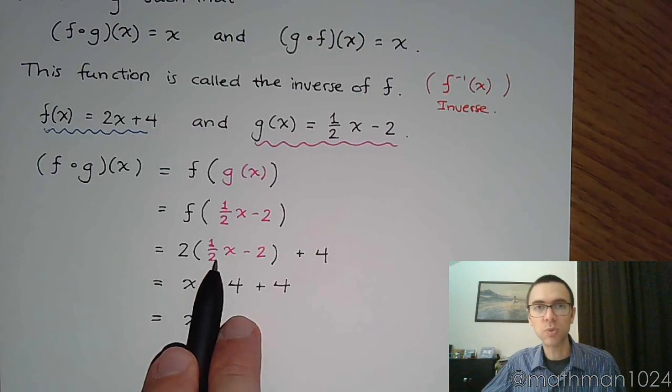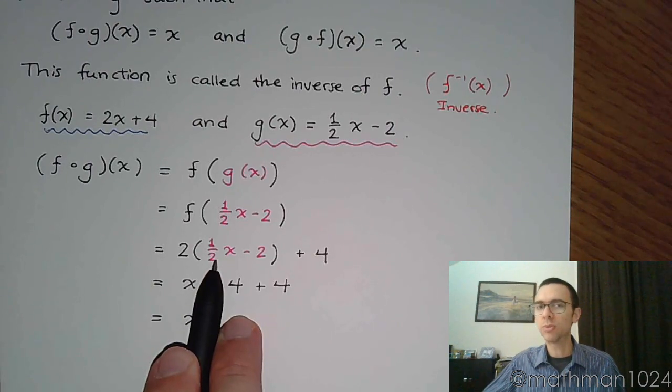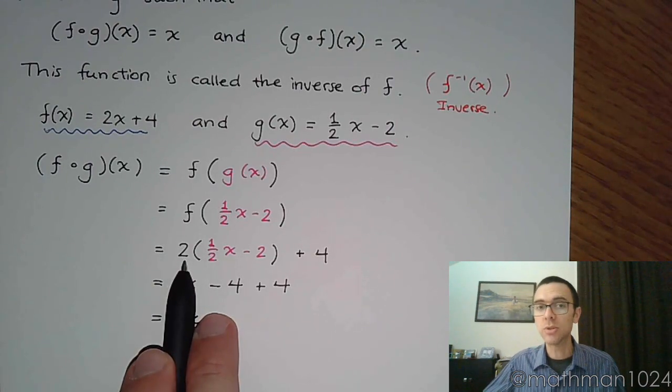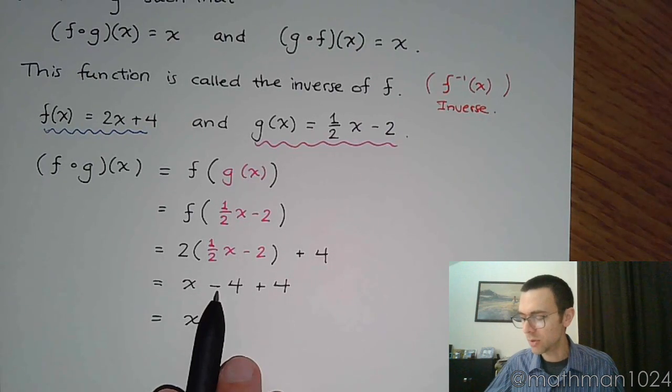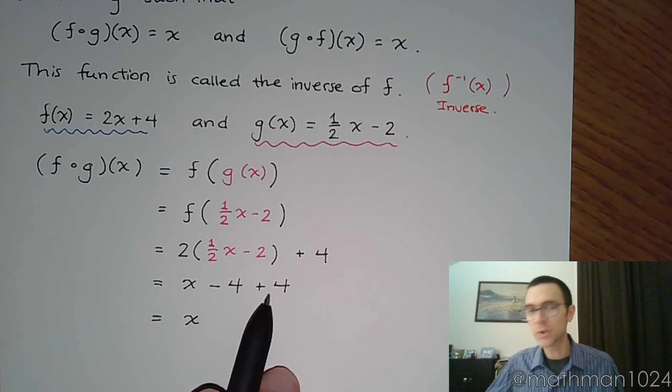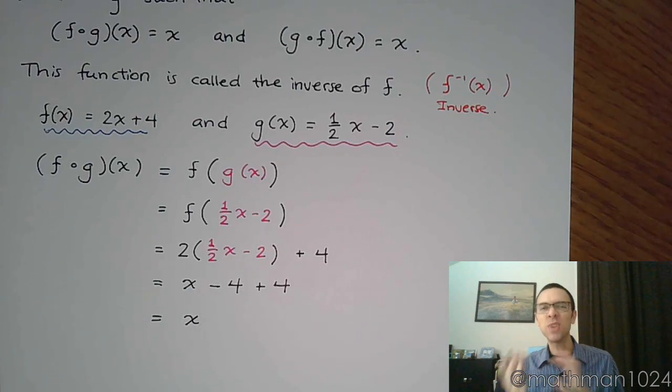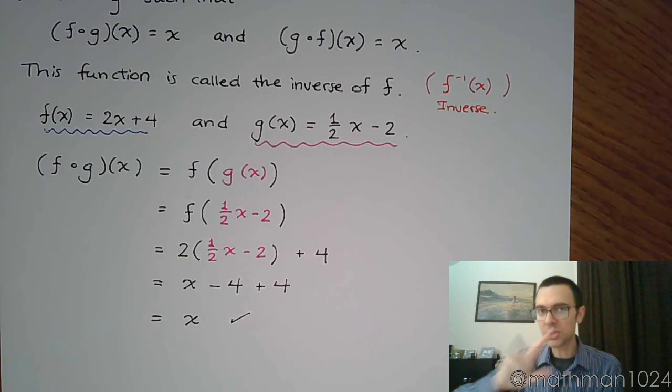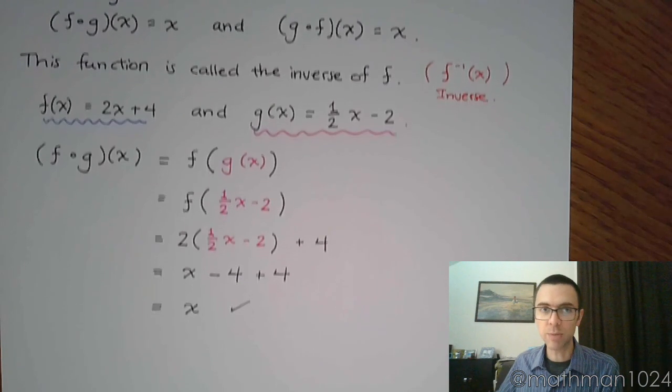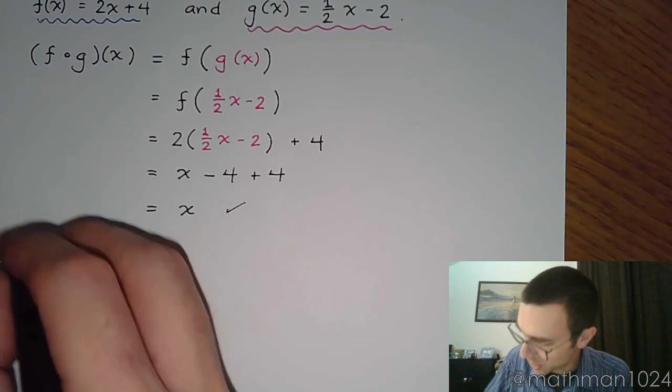See how this works out. You have multiplication times one half, and the inverse of multiplying times one half is multiplying times 2. The way this is set up is kind of hard to see, but there is a minus 4 that's going on here, and the inverse of minus 4 is plus 4. So these operations end up canceling each other out. But let's flip it around and see if we still get the same thing. See if we still get x if I change the order here.